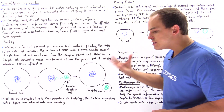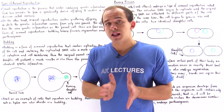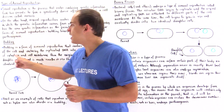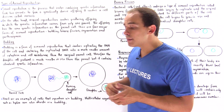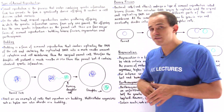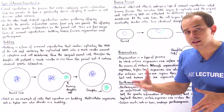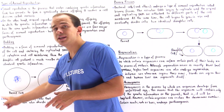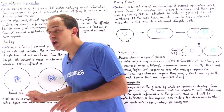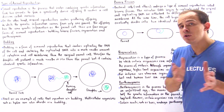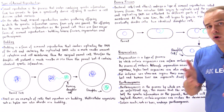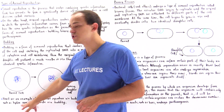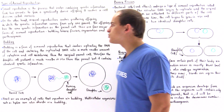Both unicellular and multicellular organisms undergo budding. A common example of a unicellular eukaryotic organism that does this is the yeast cell, while the hydra is an example of a multicellular organism that undergoes budding.